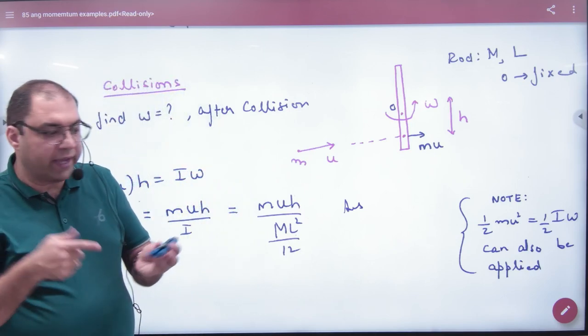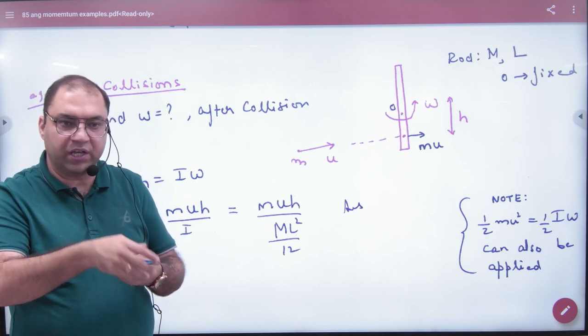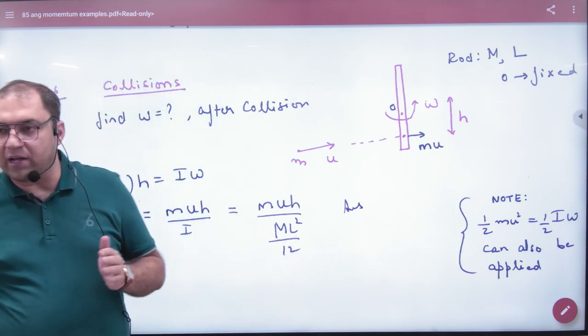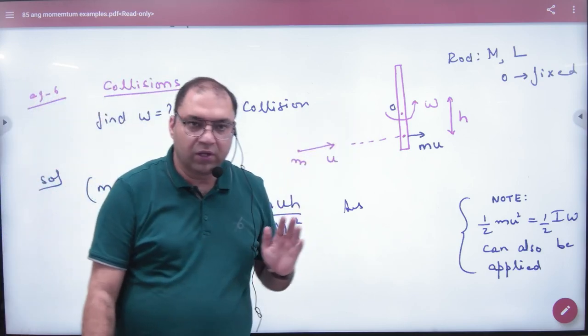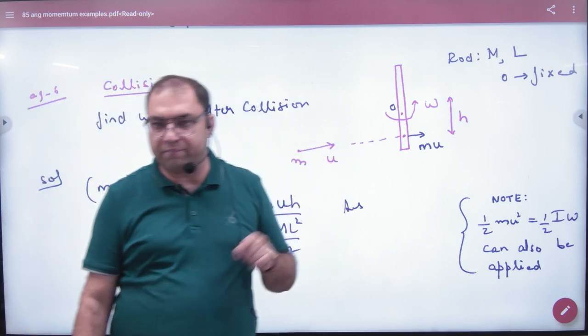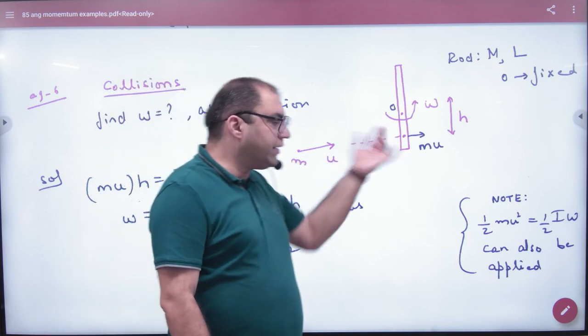The other case is a particle will hit it and it is not hinged. If it is hinged, it will move on the table. So let's do the first case when it is hinged. The rod is hinged on the table, a particle with velocity u hits it.